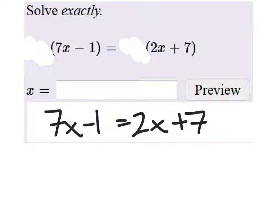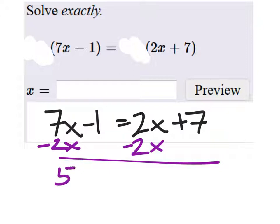So I want the x's all on the same side. Which side do you guys want them on? The left. So we'll subtract the 2x here. That will give us 5x.